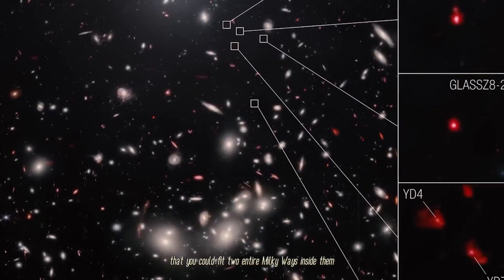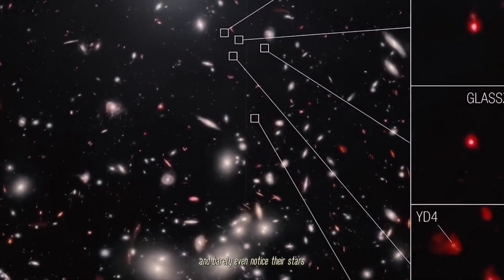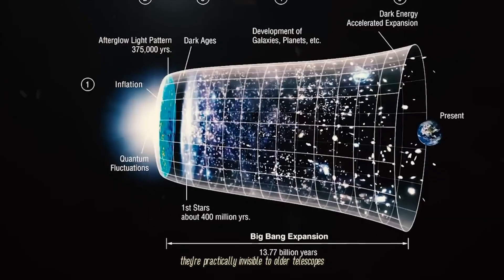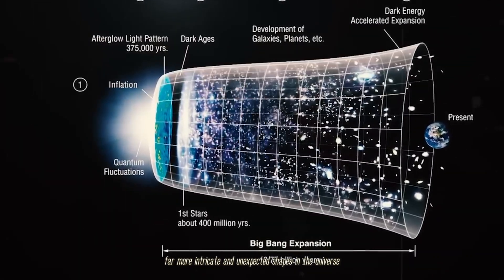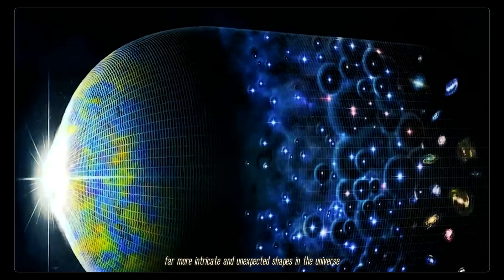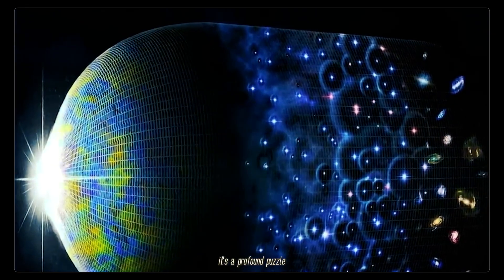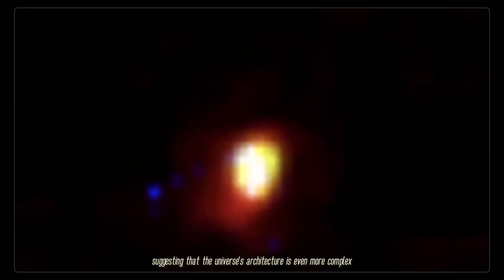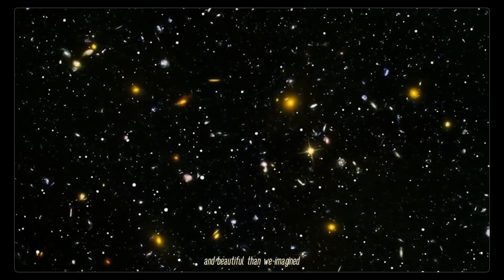These are so incredibly spread out, so sparsely populated with stars, that you could fit two entire Milky Ways inside them and barely notice their stars. They're practically invisible to older telescopes. These ghost galaxies hint that gravity sculpts far more intricate and unexpected shapes in the universe than our previous models ever predicted.